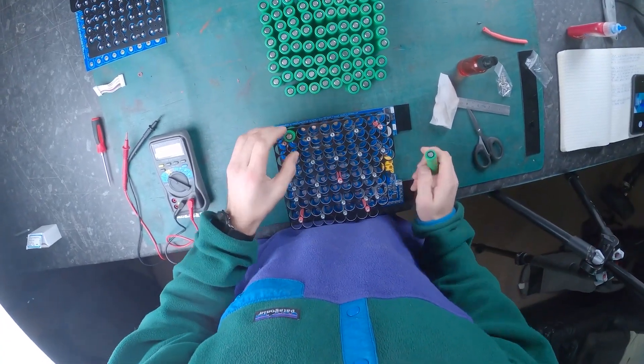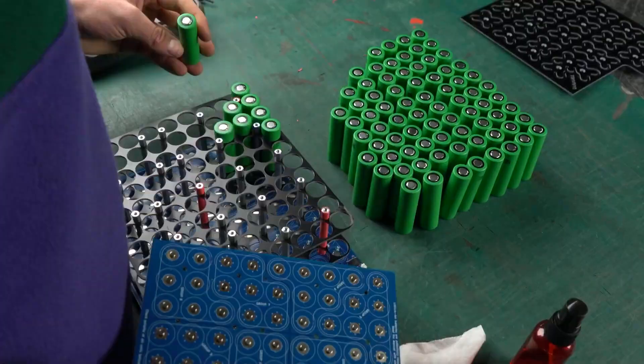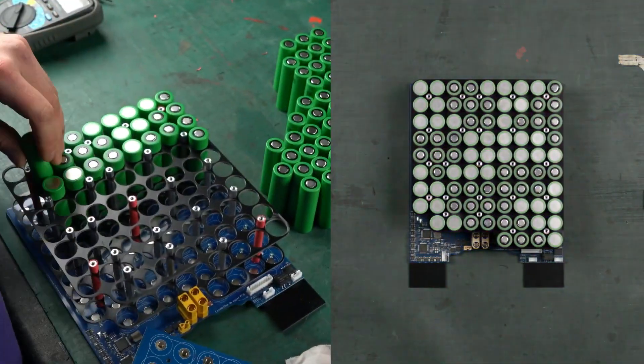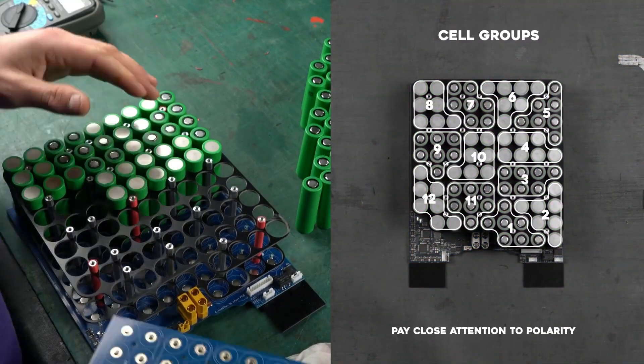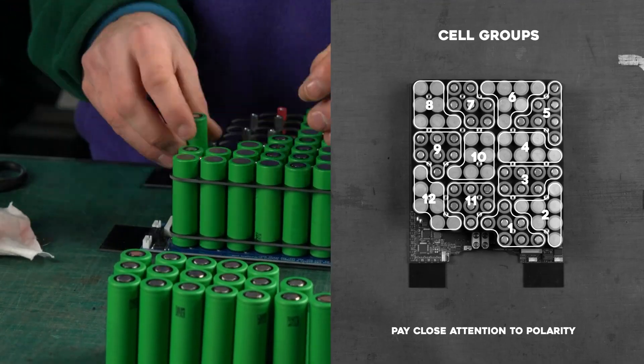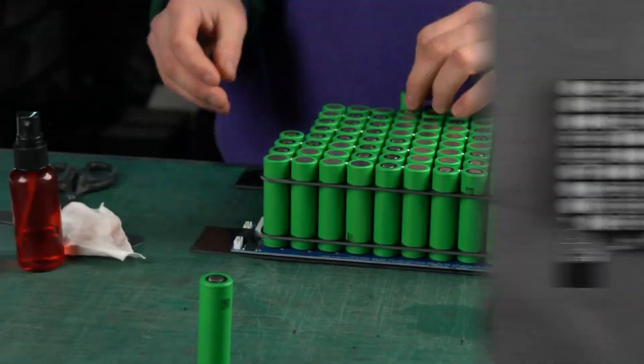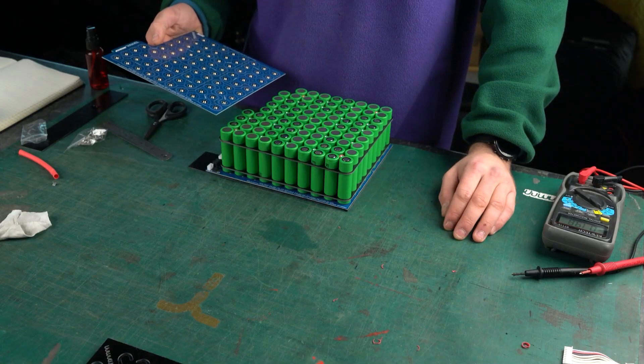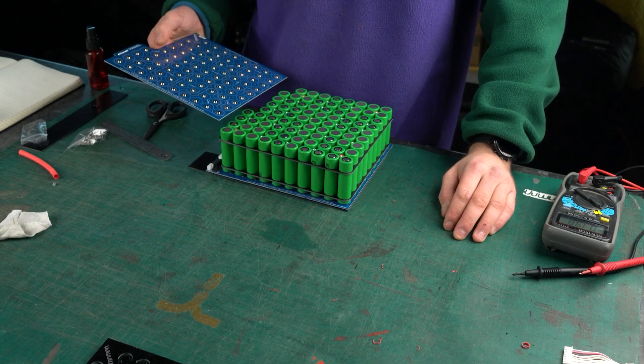Then, insert the cells in their groups. The groups 1 to 12 are shown on the PCBs. Make sure to pay close attention to the polarity. Once they're all in place, double check the polarity by comparing the cells with the upper PCB.